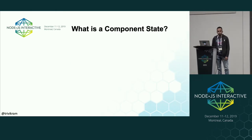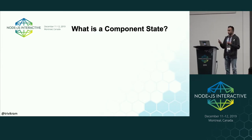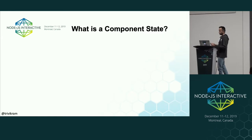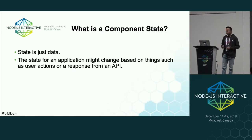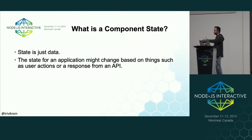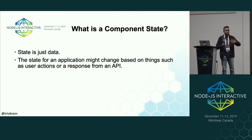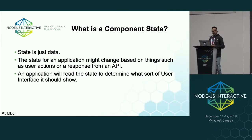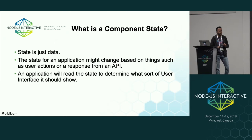So what is component state? Most of you who have used React would already know, but some of you might be new. State is just data. The state for an application might change based on things such as user actions or response from an API. User actions are when you click something and something needs to be updated. Response from an API is when you click something and data needs to be fetched from the backend, which takes time — that data is stored in the state. An application reads this state to determine what user interface to show.